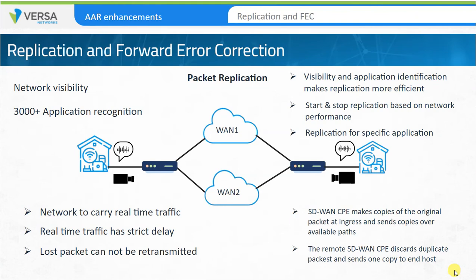The result is that the replication feature becomes smart and only starts when it's necessary and stops when it's not needed. While replication is in effect, if a packet is lost during transit, the lost packet is identified by the receiving SD-WAN node and the data stream is reconstructed by using the copy received from another link. The receiving SD-WAN node also takes care of reordering the packets if required before data is forwarded to the recipient.